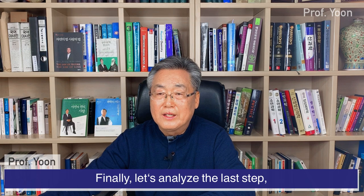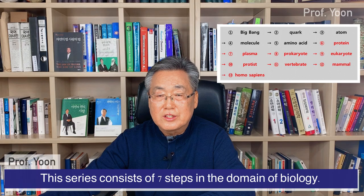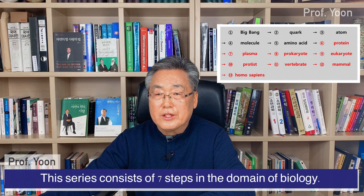Finally, let's analyze the last step. The biological chain is: Protein, plasma, prokaryote, eukaryote, protist, vertebrate, mammal, homo sapiens. This series consists of seven steps in the domain of biology.